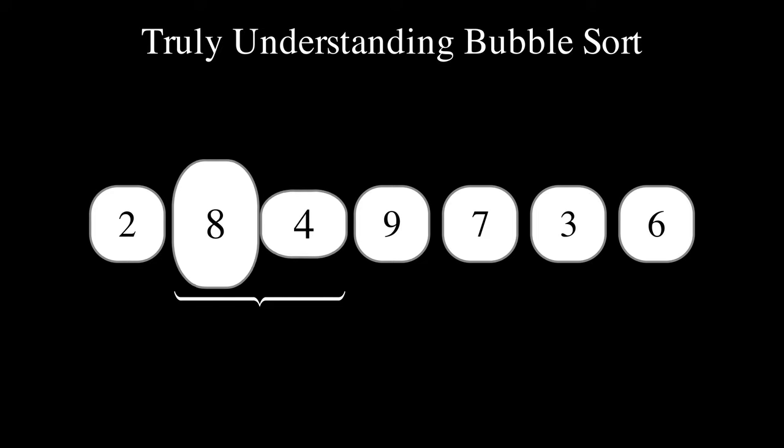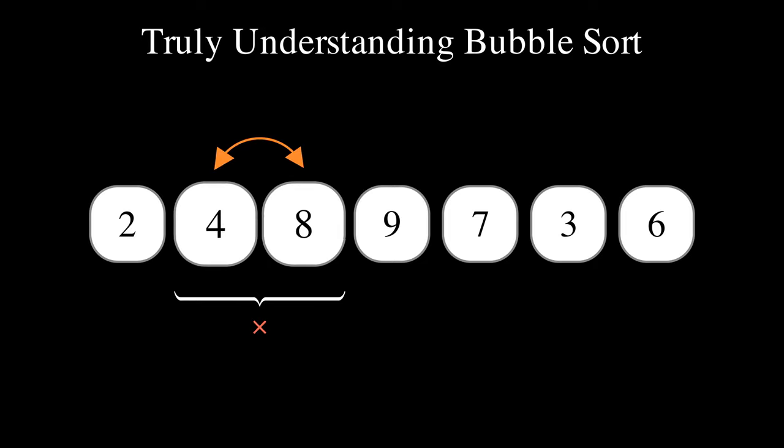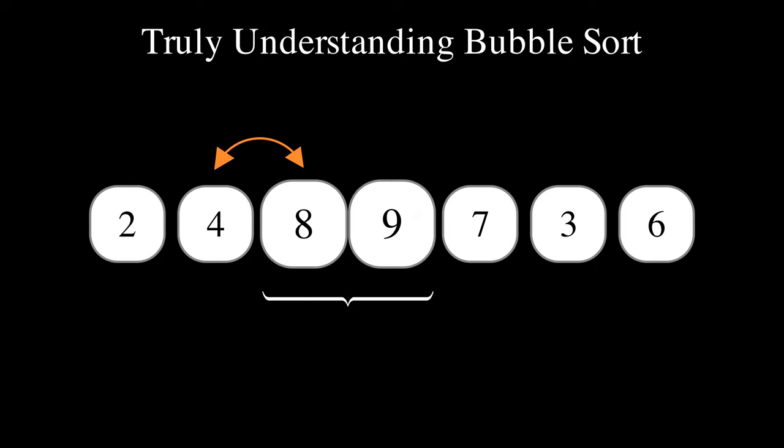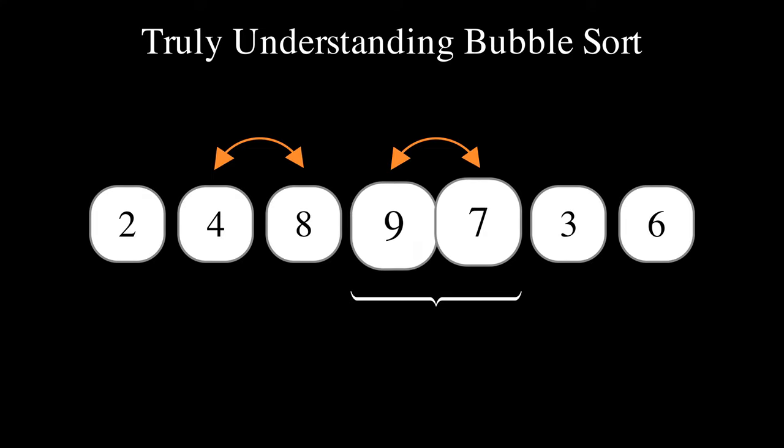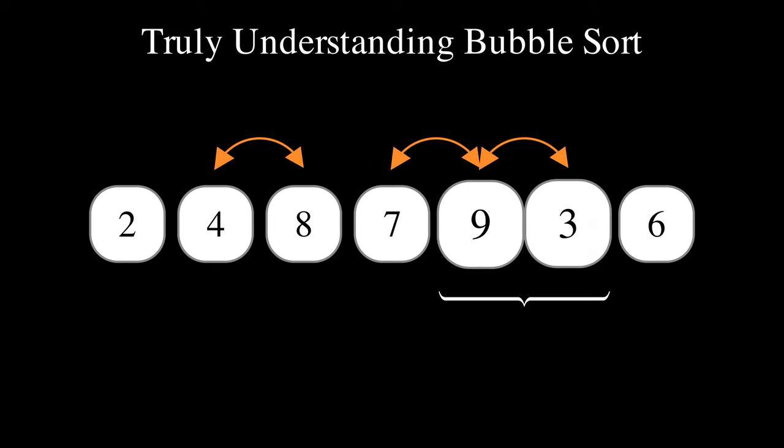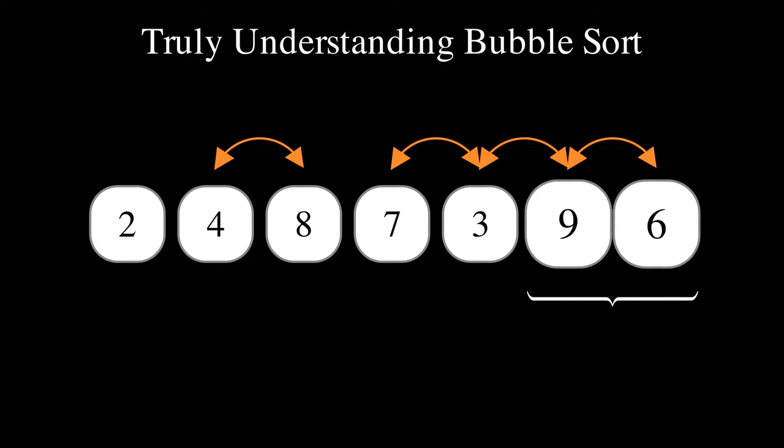If the two elements are in the wrong order, it swaps them and then moves on to the next pair. The pass continues in a similar manner. Leave 8 and 9 as they are. Swap 9 and 7. Swap 9 and 3. Swap 9 and 6. The first pass is done.